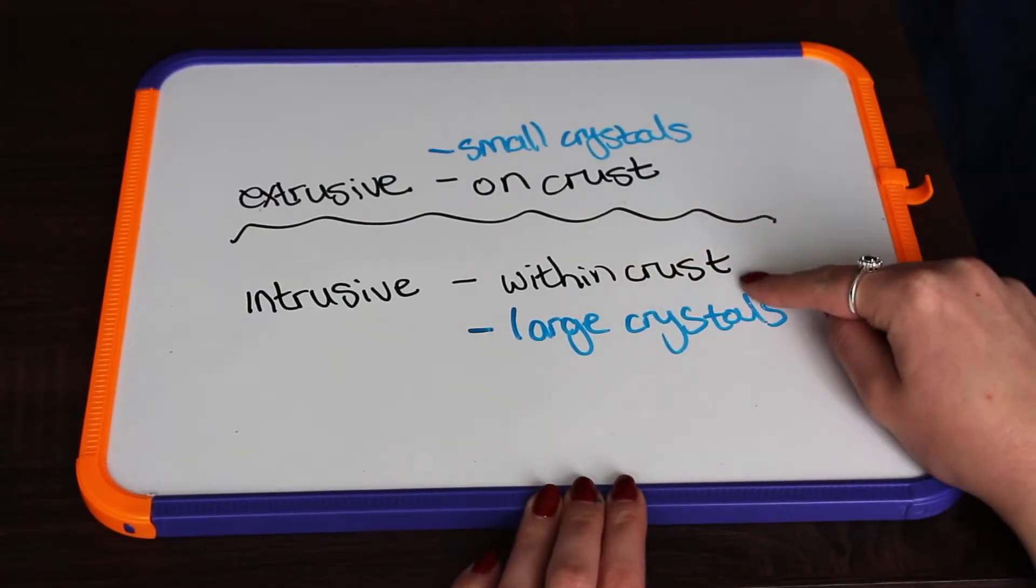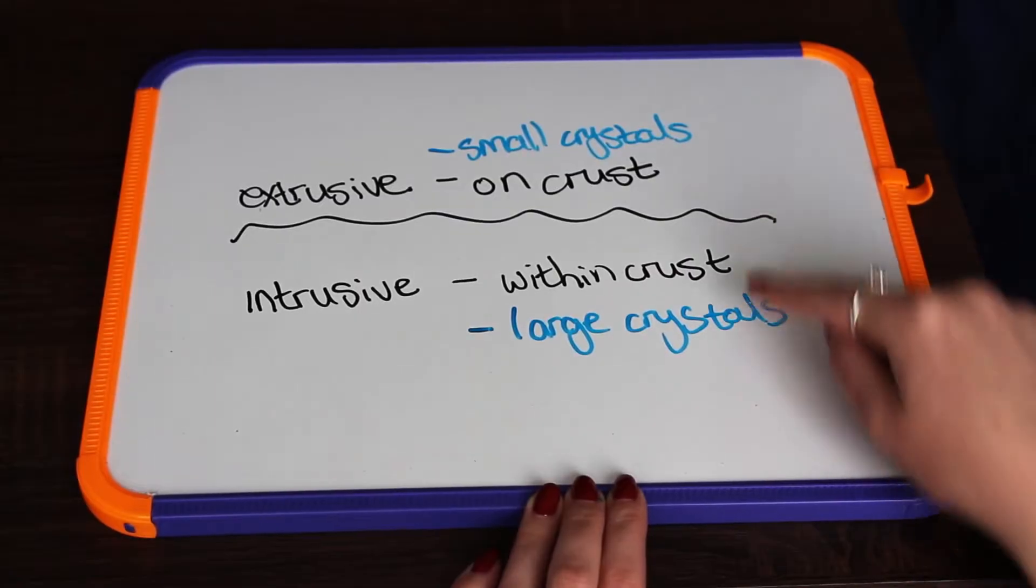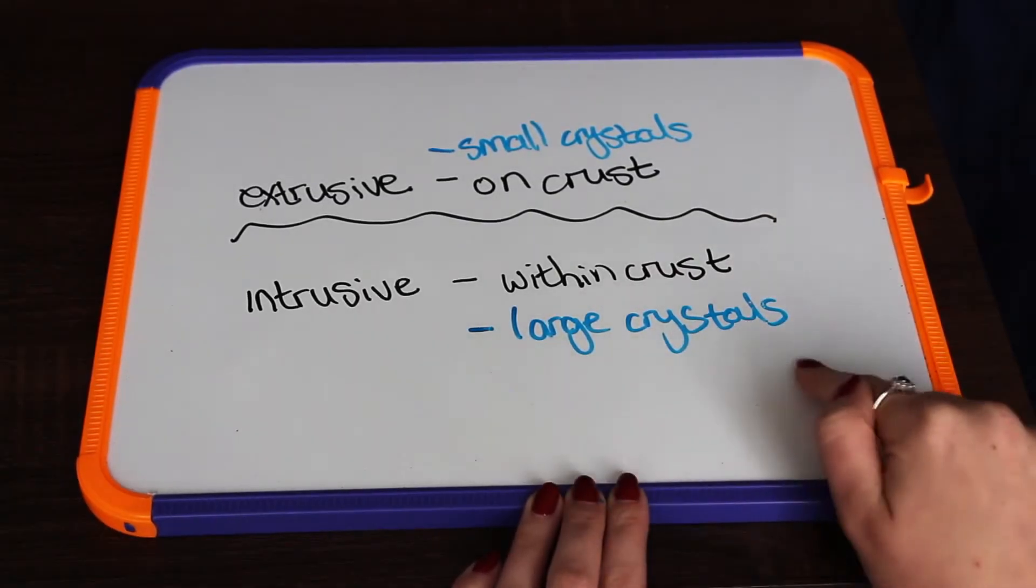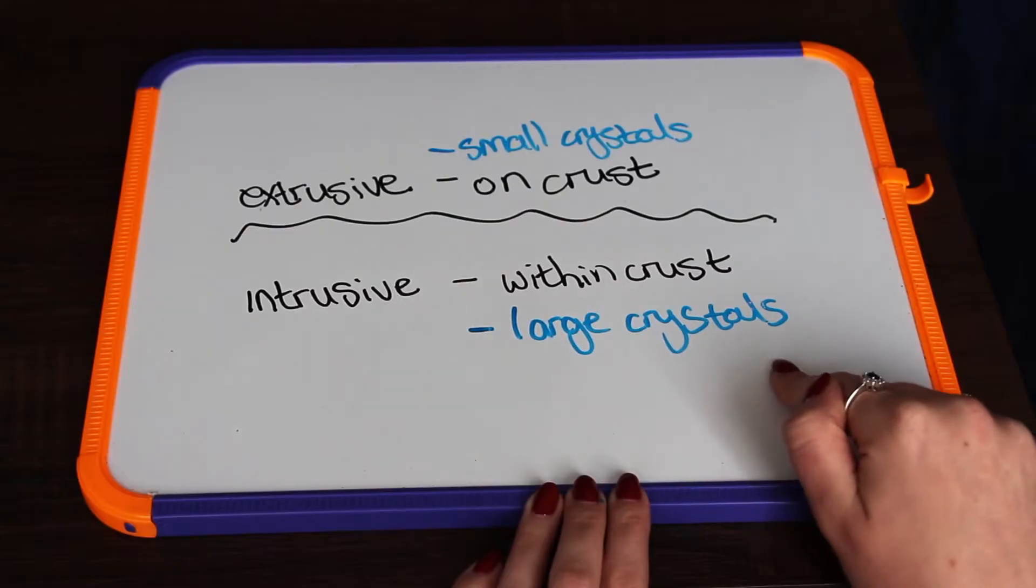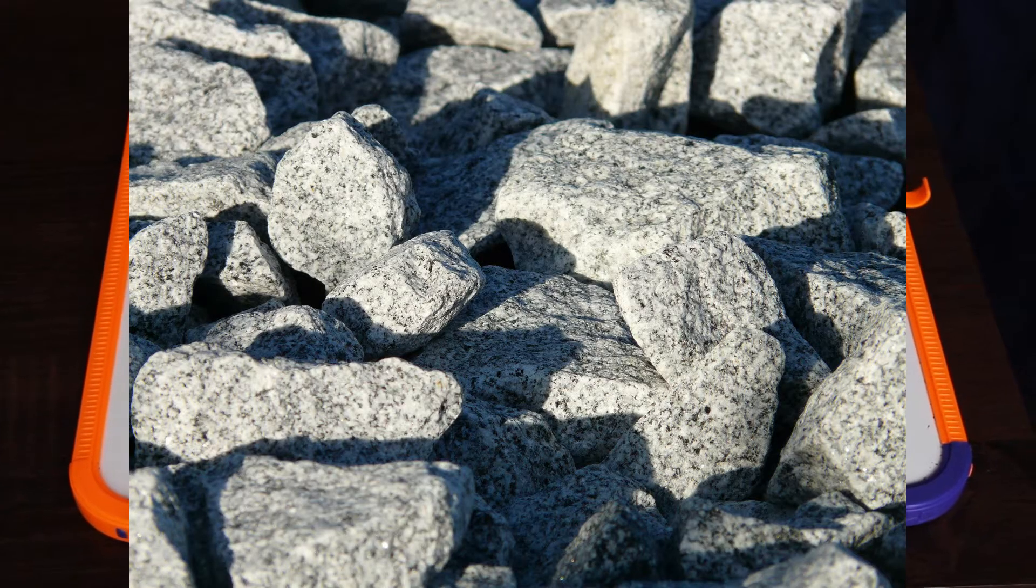Because intrusive igneous rocks cool down within earth's crust, it will take longer for this magma to solidify, giving the minerals more time to stabilize and thus forming larger crystals.